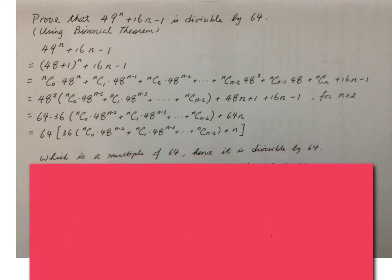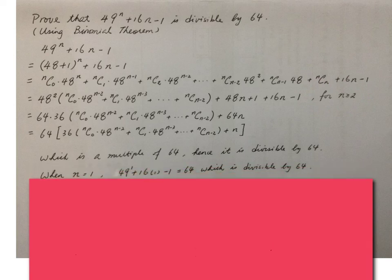Therefore, we can conclude that this one is a multiple of 64. That's why it is divisible by 64. But this is for the case when n greater than or equals to 2. Now, if n equals 1, then we can just substitute the value to this expression. And then we can see that actually 49^(3×1) + 16×1 - 1 is just 64. Of course, it is divisible by 64.